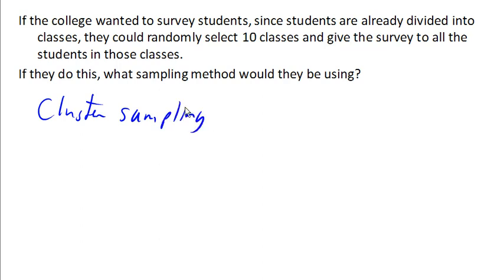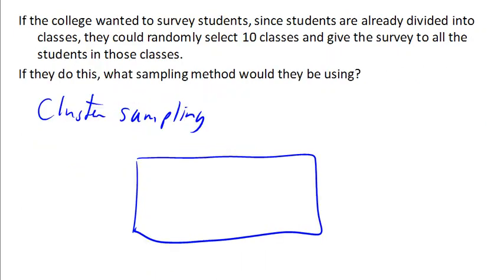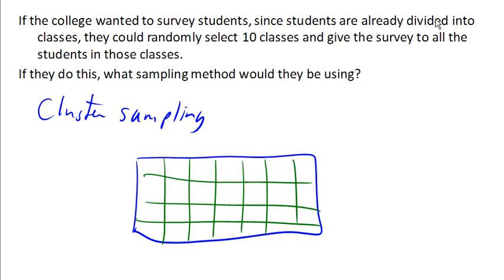And this is different than the stratified sampling we saw earlier. Because in stratified sampling, remember we divided the population up into three groups and then randomly selected from inside each group. With cluster sampling, we're dividing our population up into groups. In this case, they're divided up into classes. And then instead of randomly choosing from inside each of these groups, we're gonna select ten of those groups and give the survey to all the students in those classes. So we're gonna sample everyone from this class and everyone from this class and everyone from this class. So we're randomly selecting pockets and then sampling everyone inside that pocket.